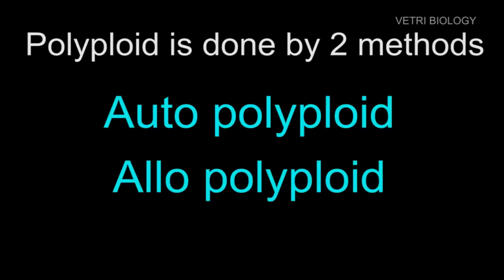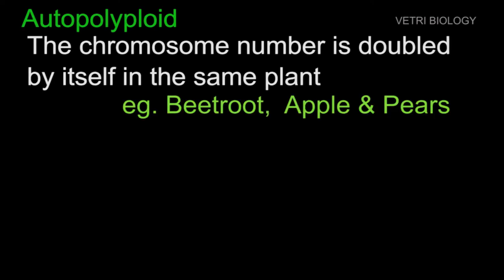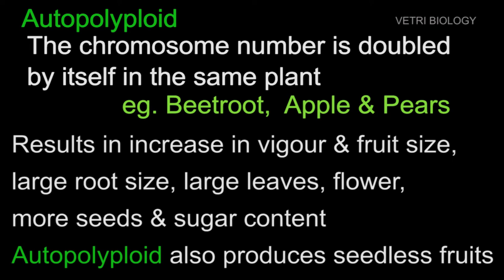Polyploid breeding is done by 2 methods: auto-polyploid and allo-polyploid. In auto-polyploid, the chromosome number of a plant is doubled by itself within the same plant. Examples include beetroot, apple, and pear. These plants show a 3N chromosomal condition, resulting in increased growth, fruit size, root size, and sugar content. Such plants are also called seedless fruits.